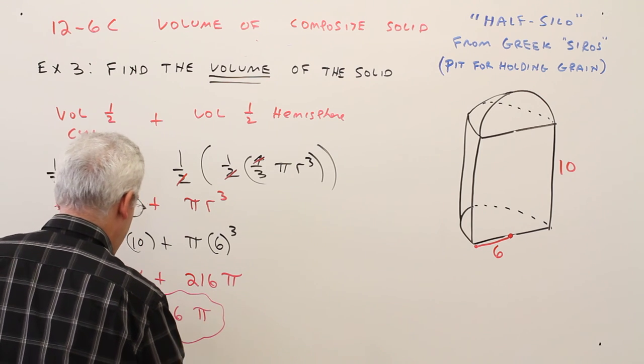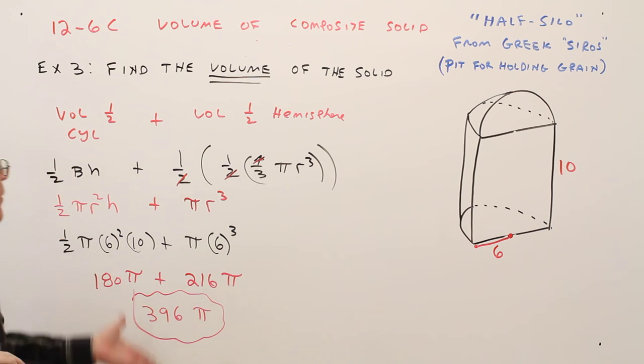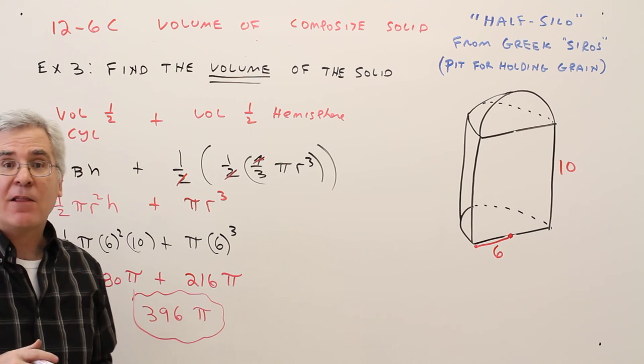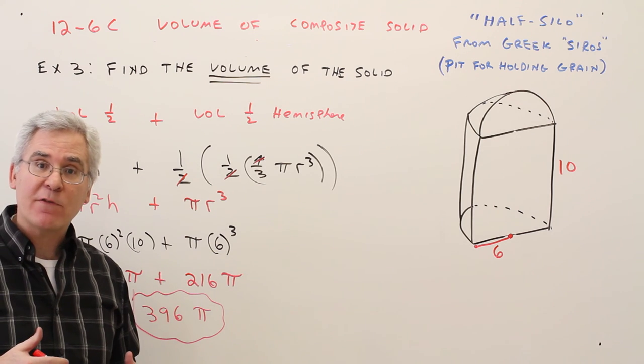No units were given. So again, leave your answer in exact simplified form. And there you have it. How to find the volume of a composite solid, or in this case, a half silo.